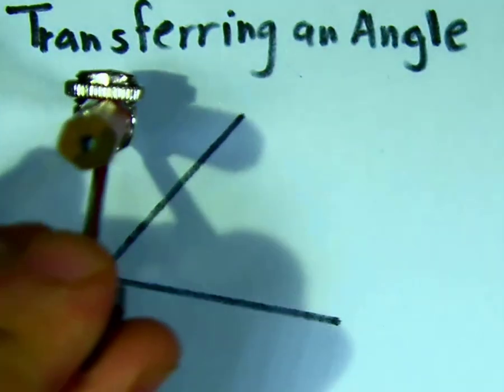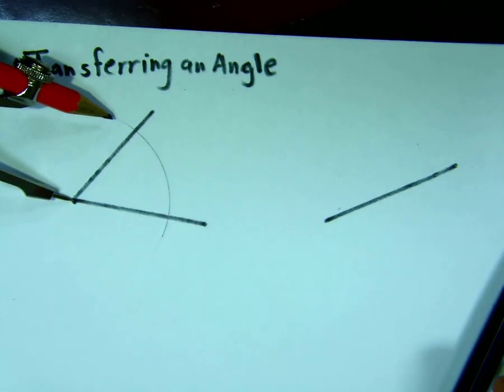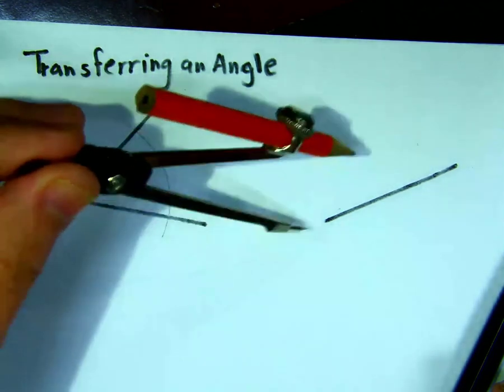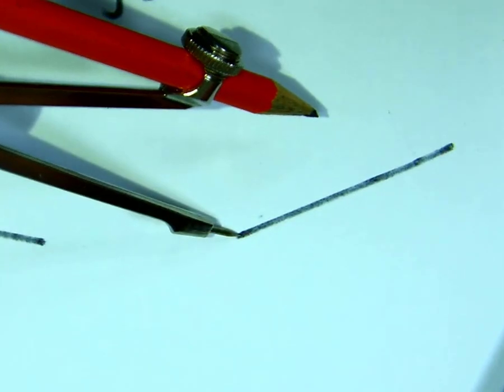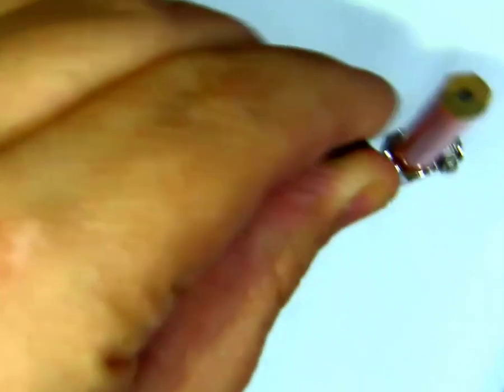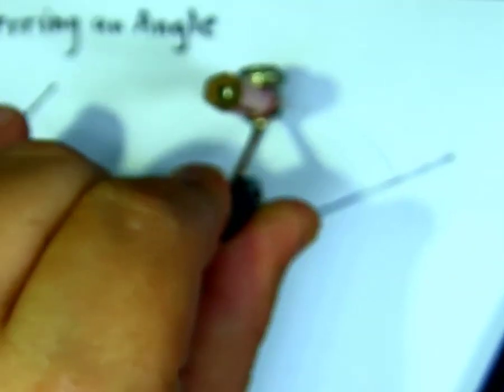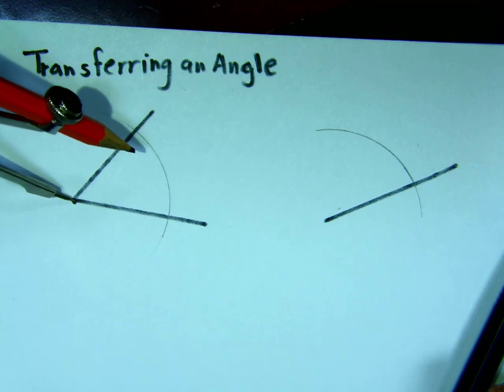Draw an arc like this. Now with the same opening, move it here and put it at the end of this line. Draw the same arc again. So what you have done is put the compass here, draw an arc.